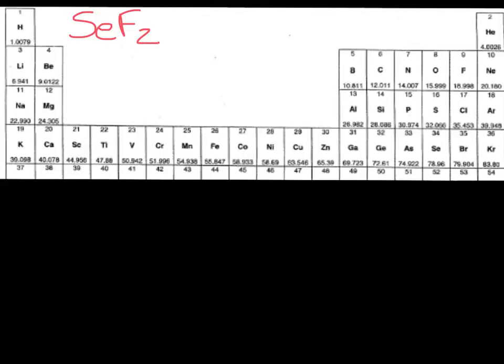So let's start by drawing the Lewis structure for selenium fluoride. The first thing we want to do is add up the valence electrons for this molecule. We have selenium down here below oxygen, so 6 valence electrons for selenium. And fluorine, group 7, main group 7, 2 times 7 valence electrons for fluorine, and we're going to end up with 20 valence electrons overall.